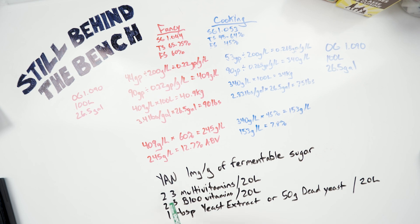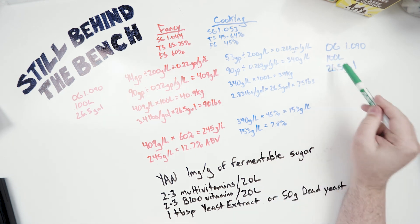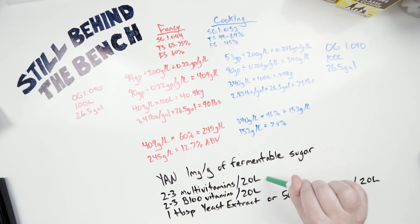So the rule again is for yeast-assimilable nitrogen, you want one milligram per gram of fermentable sugar in this case. So we know there's 245 grams of fermentable sugar in the fancy, 153 grams in the cooking. So that means you'd need 245 milligrams per liter of YAN. And in the cooking, you'd need 153 milligrams per liter. And the YAN is just something like DAP. It's the easiest thing to use. So you'd add 245 milligrams per liter of DAP, and that would be 24.5 grams of DAP to 100 liters or to your 26.5 gallons. And the same with this, it would be 15.3 grams to 100 liters or 26.5 gallons.